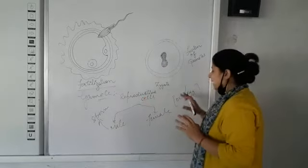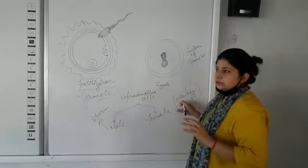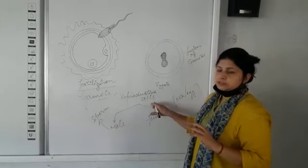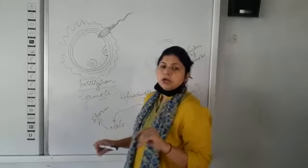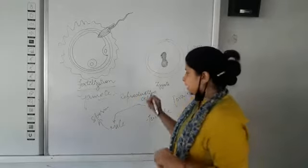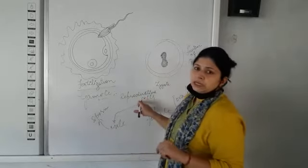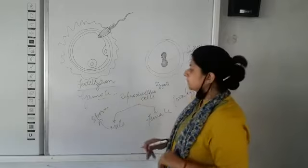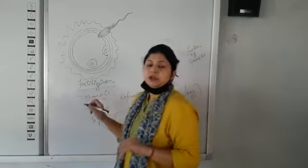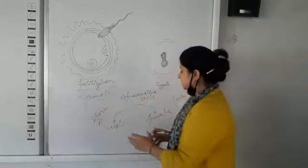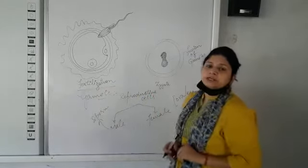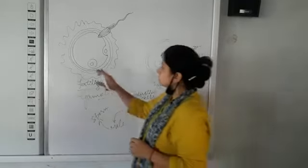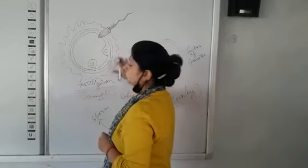From the ovary, the egg is released as the female reproductive cell, and the sperm is the male reproductive cell. What is fertilization? Fertilization is the fusion of male and female reproductive cells. Look at the diagram here.